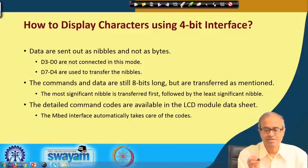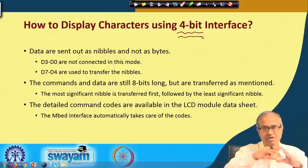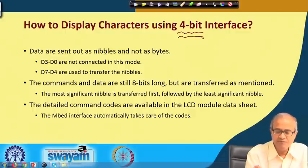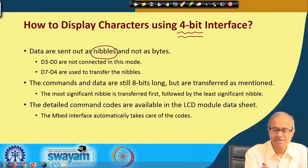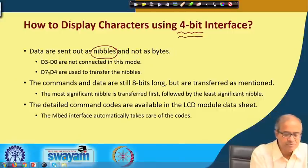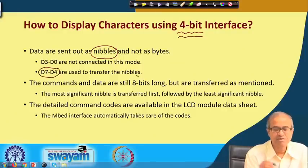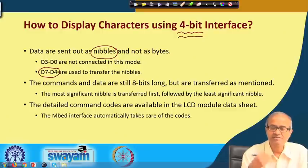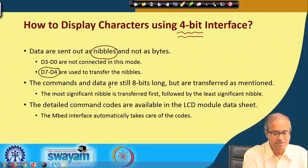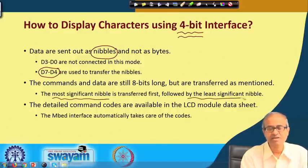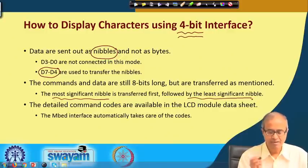In our experiments, we will use 4-bit mode for simplicity, requiring only 4 data lines instead of 8. In 4-bit mode, data are written to the display 4 bits at a time — a 4-bit unit is called a nibble. Although commands and data are still 8 bits wide, they are sent in two cycles: the higher-order 4 bits first, followed by the lower-order 4 bits.